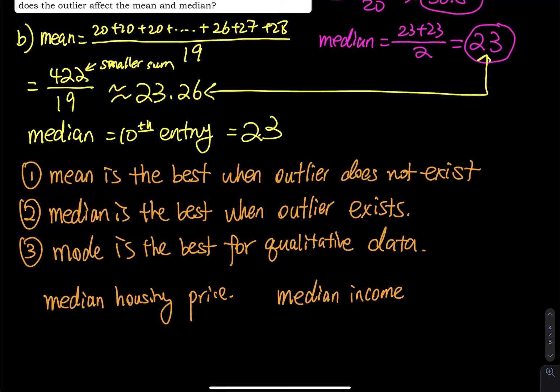Because we have some people they earn a lot, some people they don't earn much. If you use the word median, you can opt out the lowest and the highest.